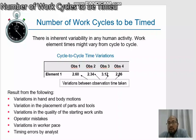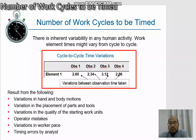There is inherent variability in any human activity, and work element times might vary from cycle to cycle. If you look at this example, the variation between observation times taken for element number one from these four observations shows the variation between these four observation times taken.